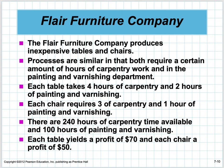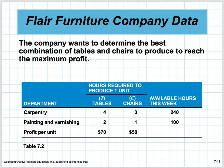Here's an example: the Flair Furniture Company produces inexpensive tables and chairs. Both require carpentry hours and then painting and varnishing. Each table takes four hours of carpentry and two hours of painting and varnishing. Each chair requires three hours of carpentry and one hour of painting and varnishing. There are 240 hours of carpentry time available and 100 hours of painting and varnishing.